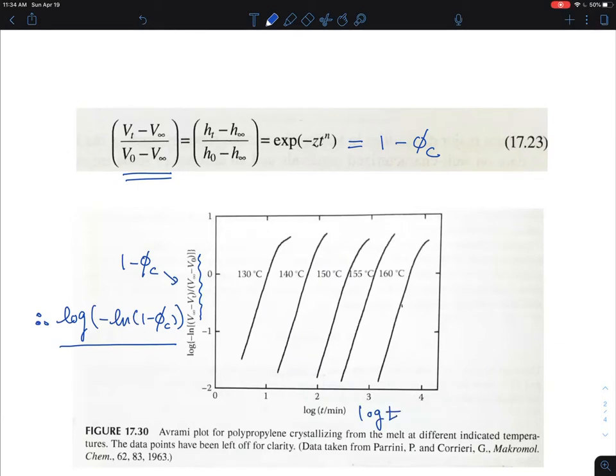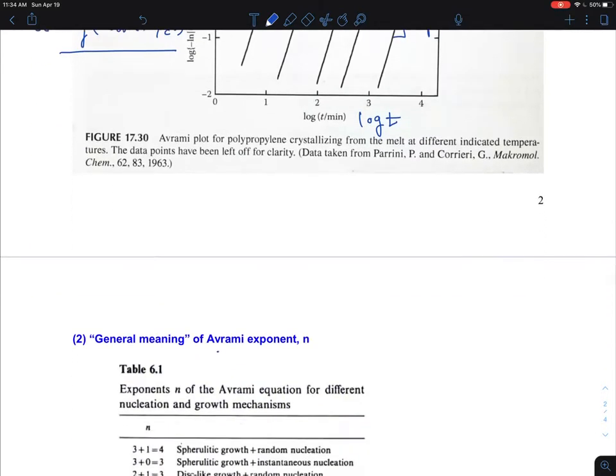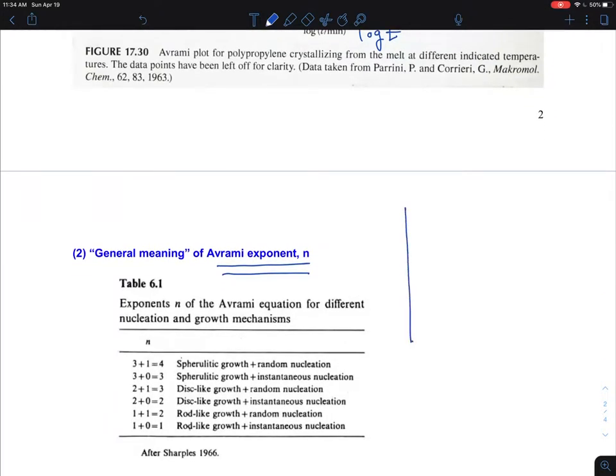The slope here is n. Once again, for the Avrami plot that I drew, I want to make a correction one more time. You are going to make a plot of log(-ln(1-φc)) versus log t. At different times you will get a slope, and that n has a meaning about the crystal mechanism.